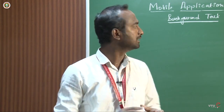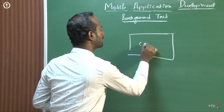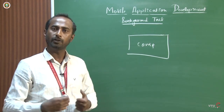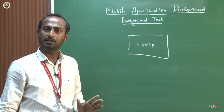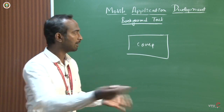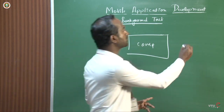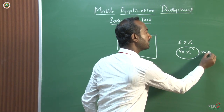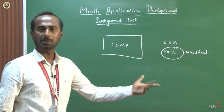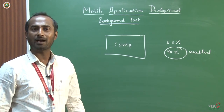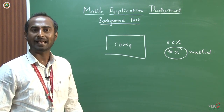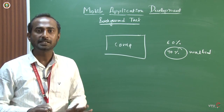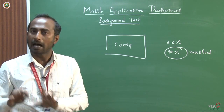For example, imagine this is my computer. If I can run only one application visible on screen, is it possible to utilize 100% of the processing power? No. Because a complex software might occupy 60% of the processing power — what about the remaining 40%? It will simply be wasted. To overcome this drawback, we use threading. Without multi-threading, we cannot efficiently utilize the processing power or system capability of any mobile device or computer.